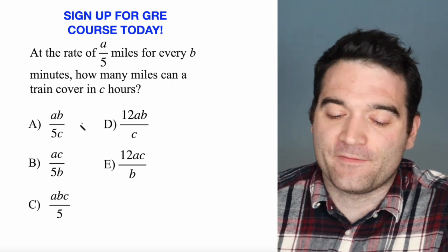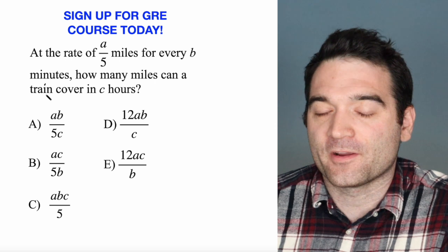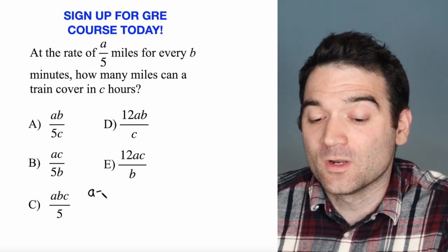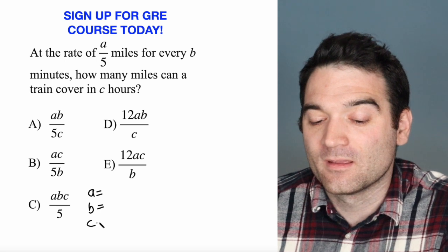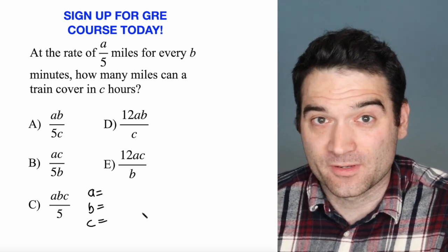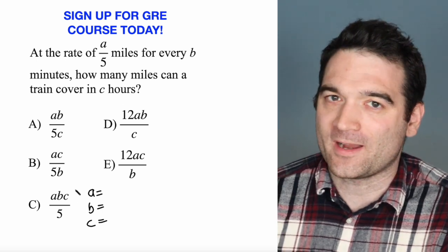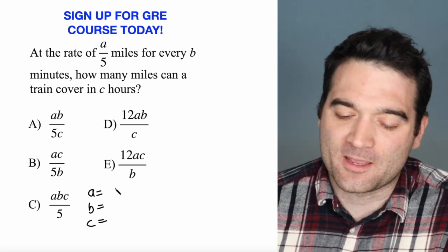So in this question, we have variables in the answer options and variables in the prompt. And when that's the case, you're totally allowed to just make up your own numbers. Because whatever number you pick for A, B, or C will carry through into the correct answer option. Let me show you what I'm talking about here.